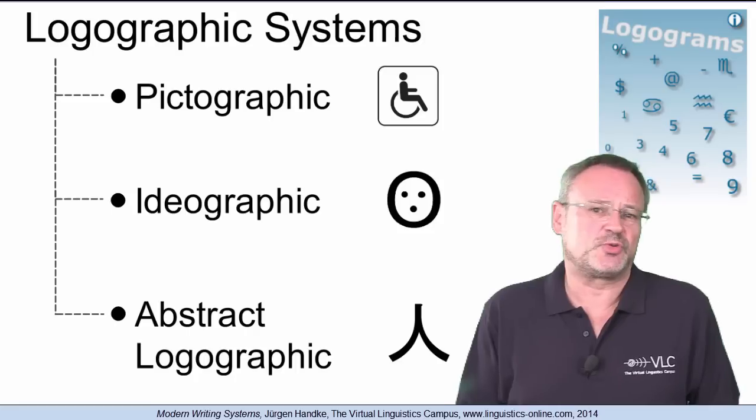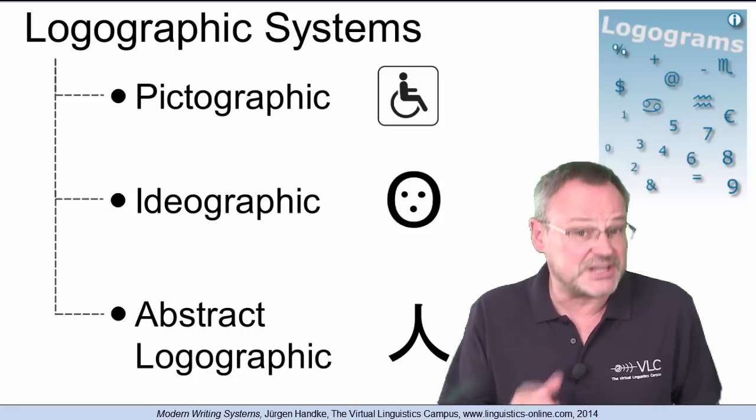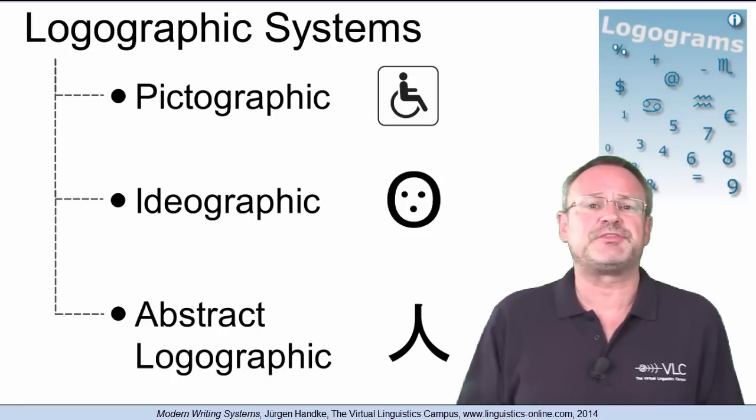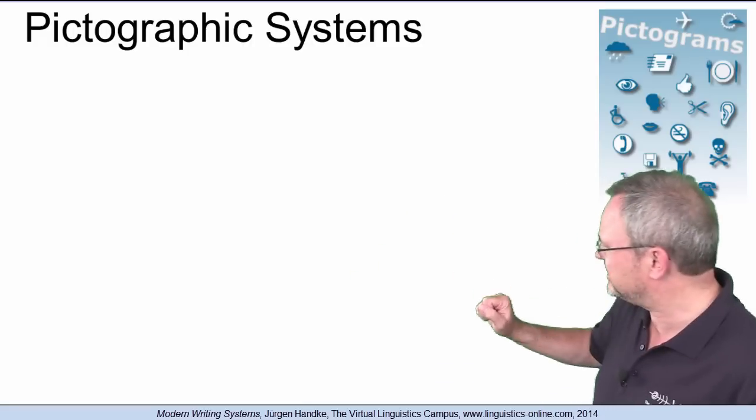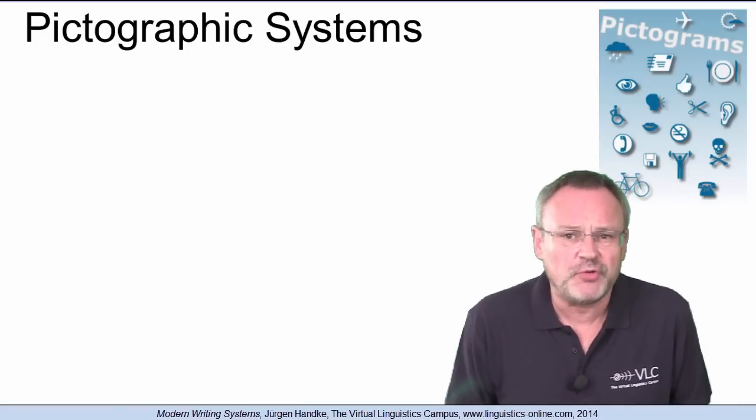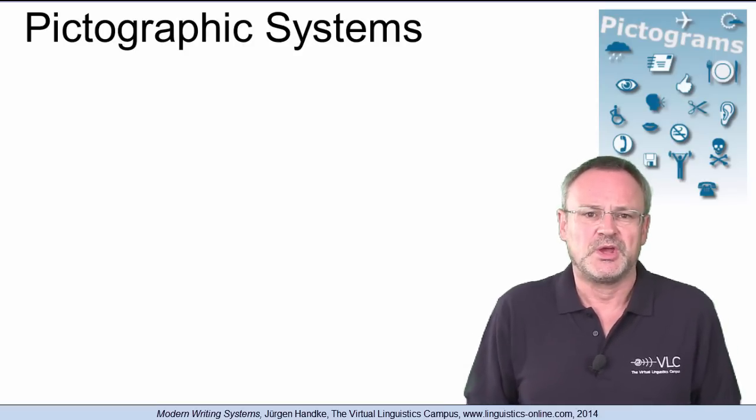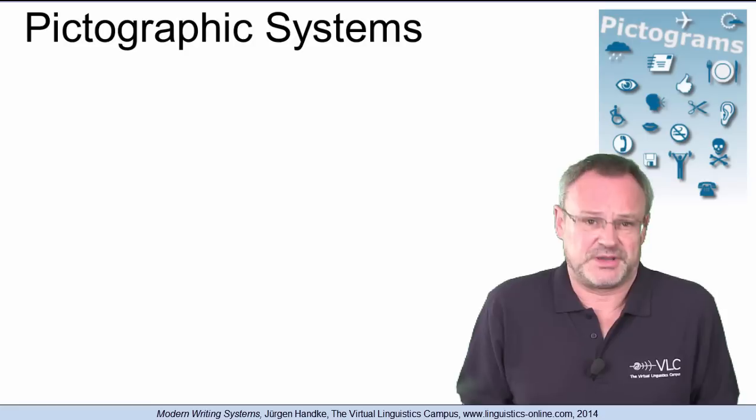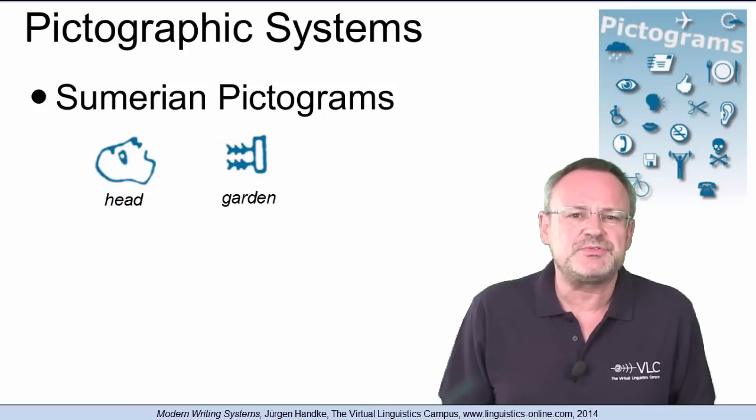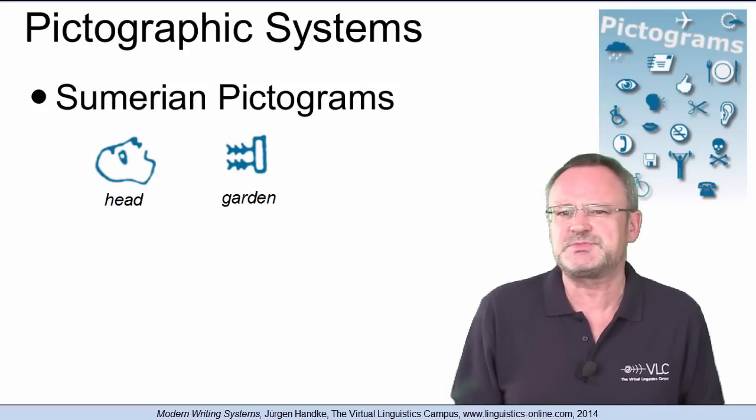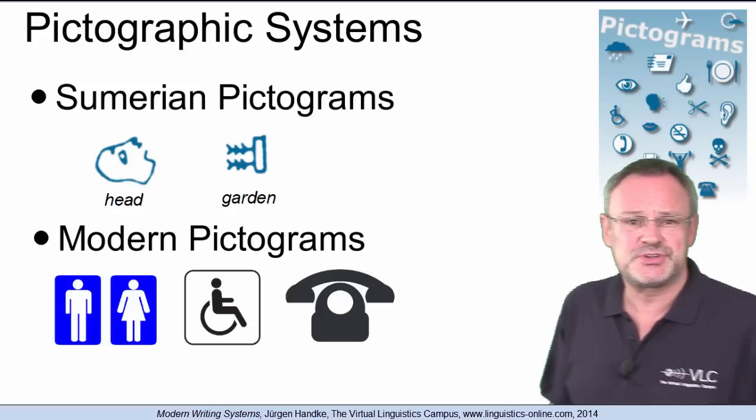In the earliest logographic writing systems, the relationship between symbol and object is clearly visible. Such variants of logographic writing systems are referred to as pictographic, where pictographs are pictorial symbols that directly represent the object to which they refer. One of the earliest examples of a pictographic writing system is a system of simple Sumerian pictographs from around 3000 before Christ. And here are some pictograms used today.